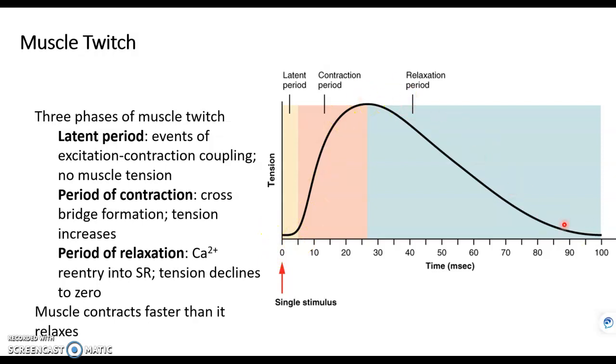Here's a graph of a muscle twitch, and we can see when the muscle fiber is stimulated for the first fraction of a second nothing happens. That's called the latent period.